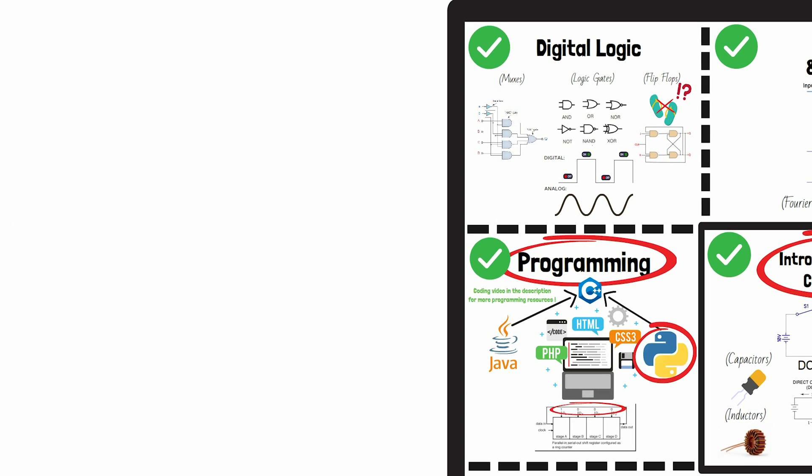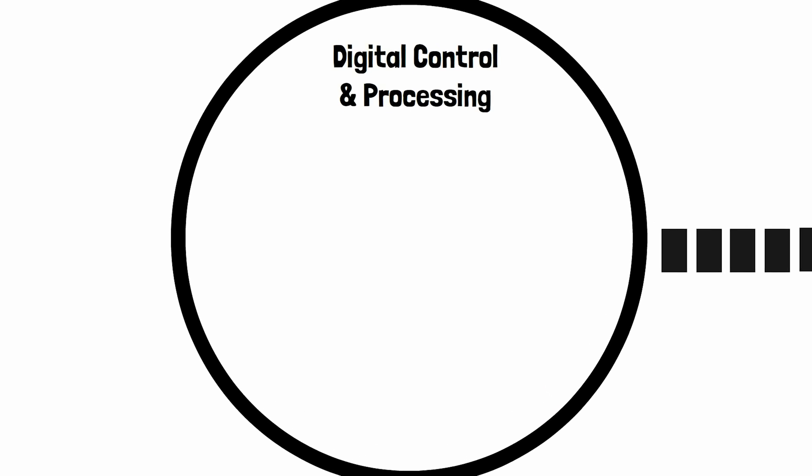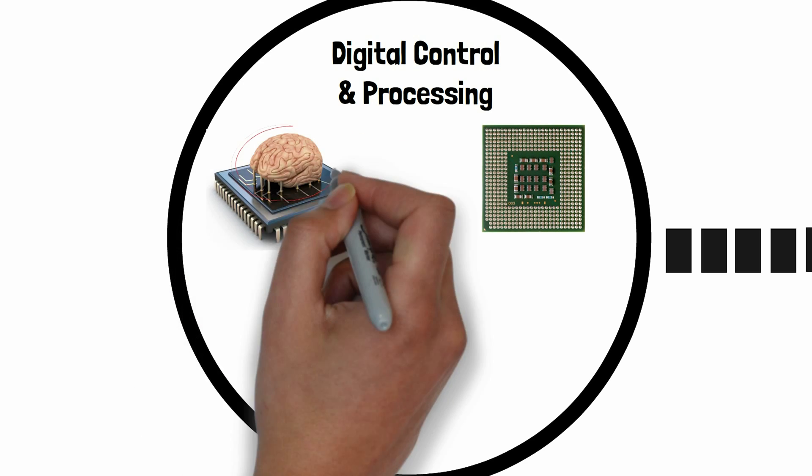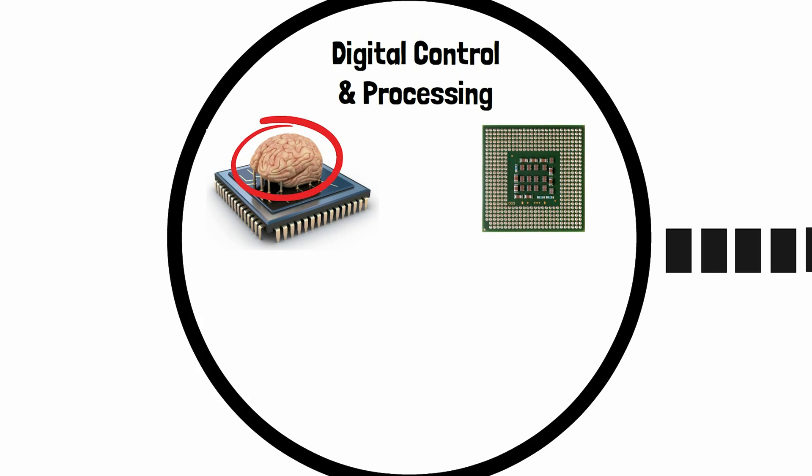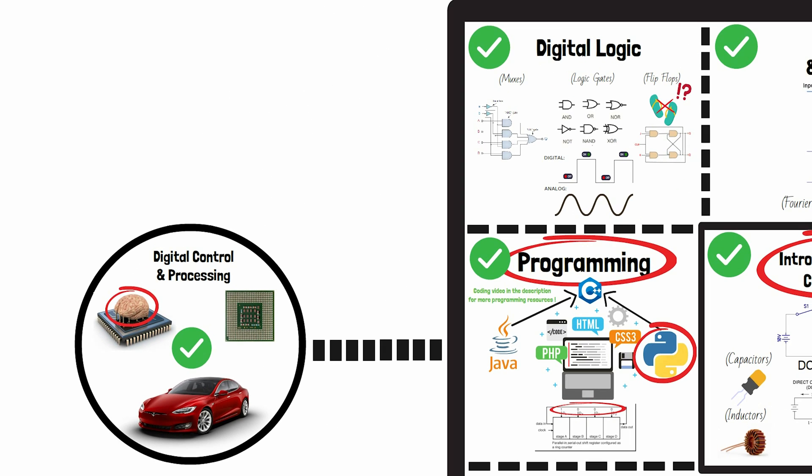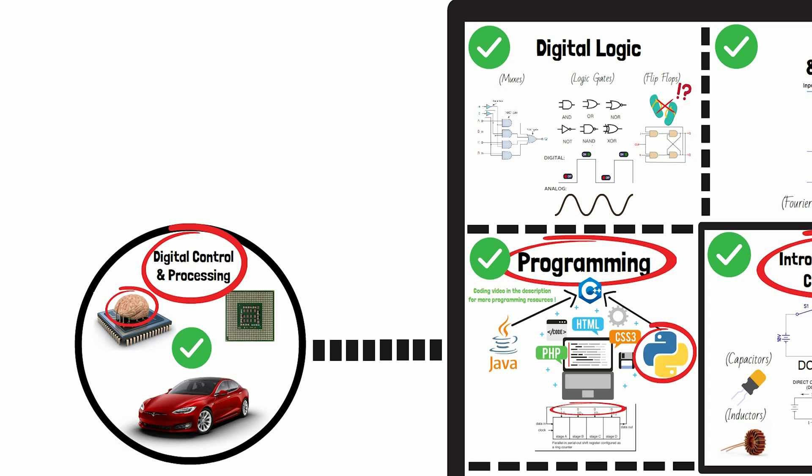If the digital and programming side of things interests you, you might consider going into digital control and processing. These engineers learn how to use microcontrollers and signal processing techniques to basically program an electrical brain that takes environmental input and then tells everything else in an ecosystem what to do. I mean something has to control how a Tesla makes decisions and drives itself, right? If you want to design that, make sure to explore your digital signal processing and data analysis courses.